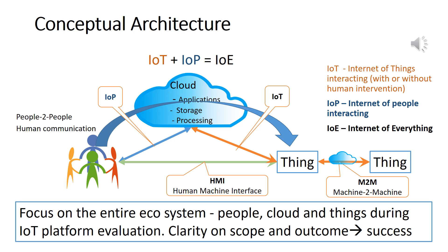The human-to-cloud connection, shown in blue, is the popular Internet of People that enables humans to access web applications, e-commerce sites, storage locations, etc. The human-to-things connection, shown in green, is the human-machine interface. The thing-to-cloud connection, shown in orange, is the Internet of Things, wherein things are interacting with applications on the Internet. The thing-to-thing connection, through the Internet, also shown in orange, is the next wave commonly referred to as M-to-X.